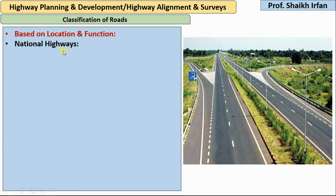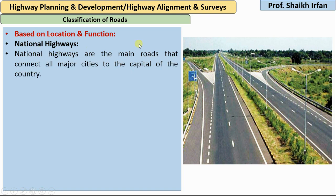First are the national highways. National highways are the main roads that connect all major cities to the capital of the country. For example, Mumbai is a major city. So if a road is connecting Mumbai with Delhi, that is the capital of the country, that road can be called a national highway.